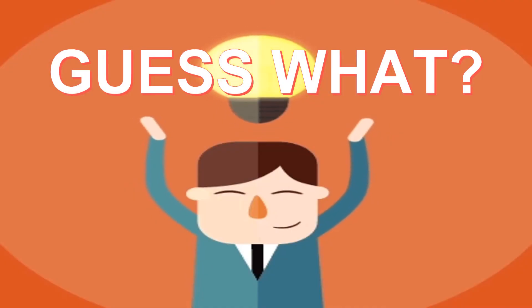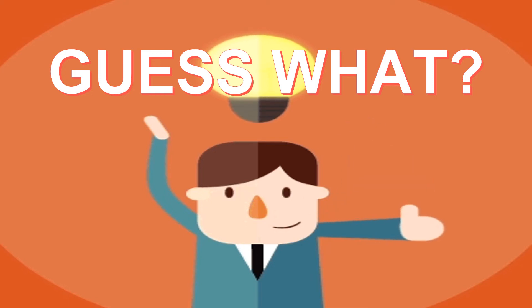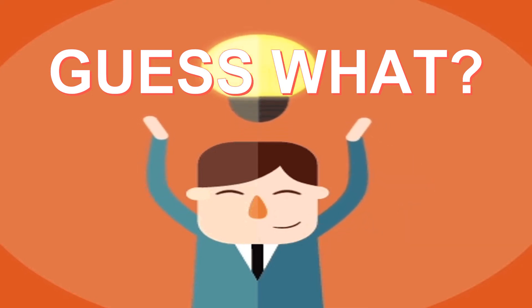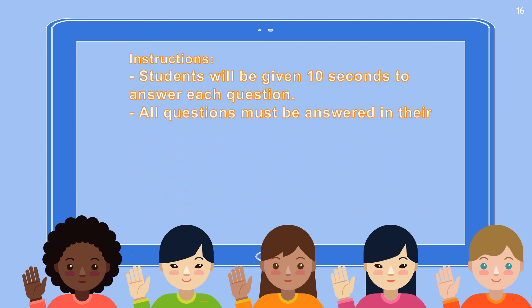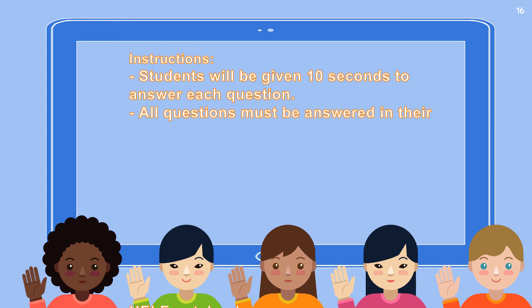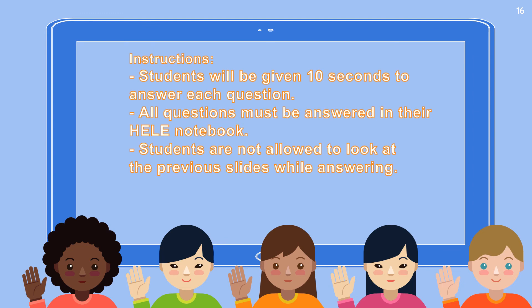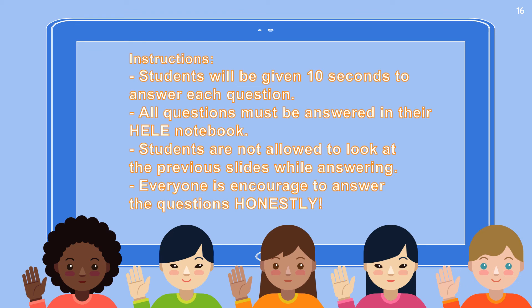Since we are done with our discussion, it is now time to check all the things that you've learned. We will be having a short activity first. Here are the instructions: first, students will be given 10 seconds to answer each question; all questions must be answered in their activity notebook; students are not allowed to look at the previous slides while answering; and lastly, everyone is encouraged to answer all the questions honestly.